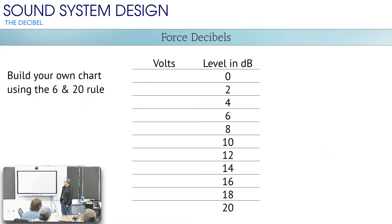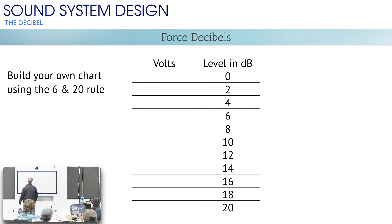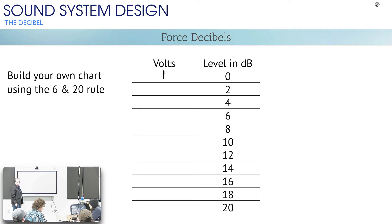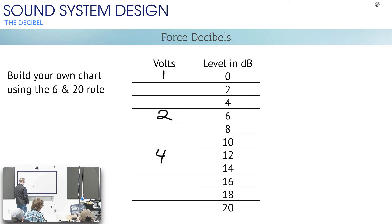Let's build our own chart using only the 6 and 20 rule. Start with 1 volt equals 0 dB. If I take 1 and multiply it by 2, I go up 6 dB — so 2 volts is 6 dB. Double that again: 4 volts is 12 dB. Take 4, multiply by 2: 8 volts is 18 dB. Or take 1 and multiply by 10: 10 volts is 20 dB.